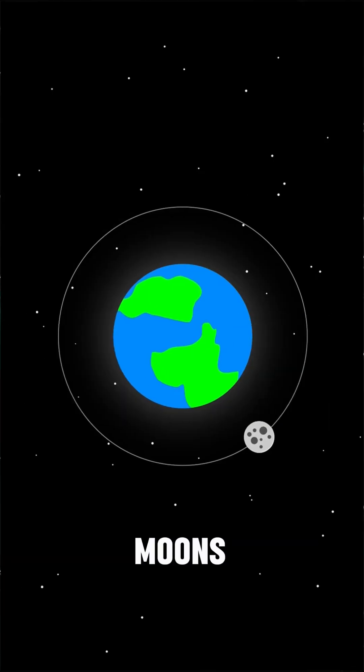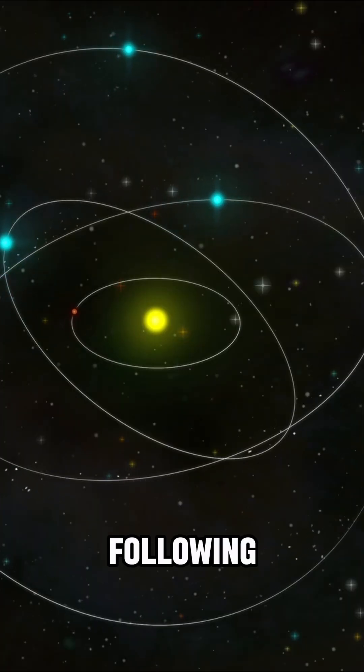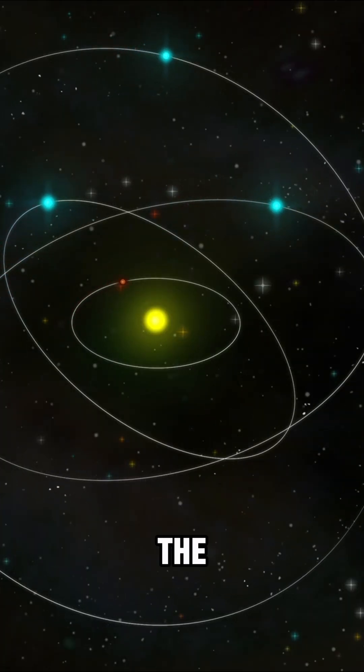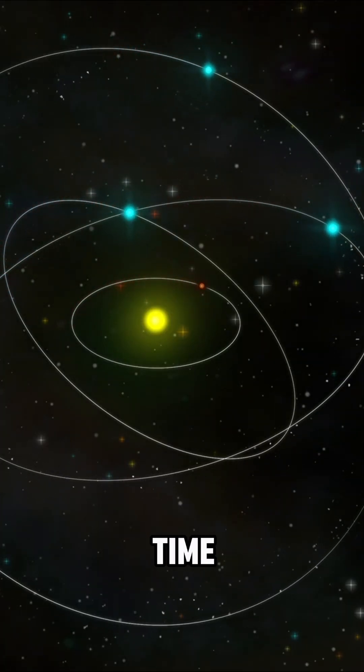Planets orbit stars and moons orbit planets because they're following the curved paths created by the curvature of spacetime around massive objects.